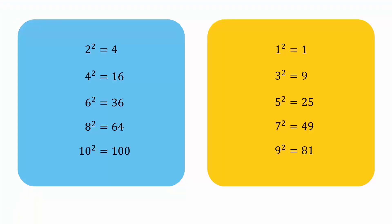Consider these two columns of numbers and their perfect squares. Do you notice any difference between these two columns? Look carefully and discuss it with your friends.